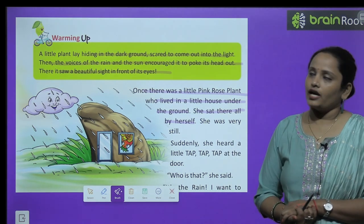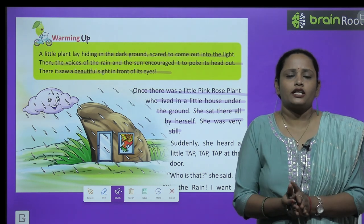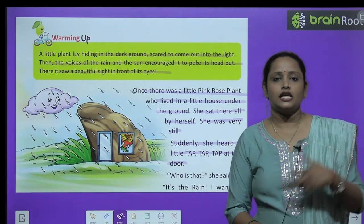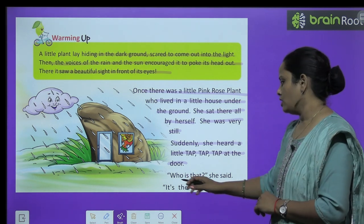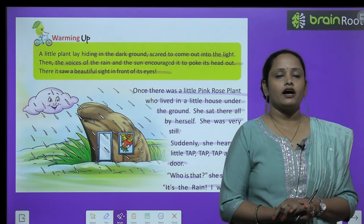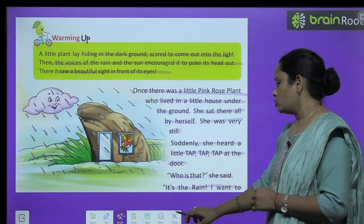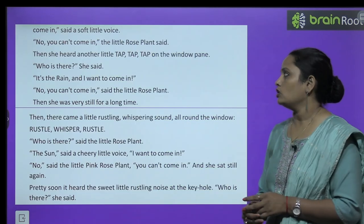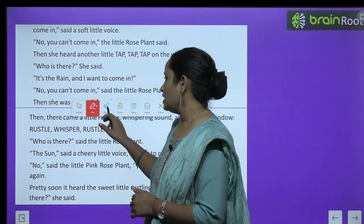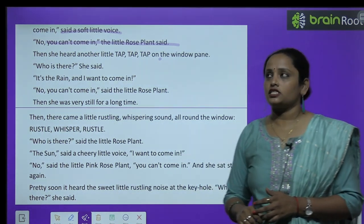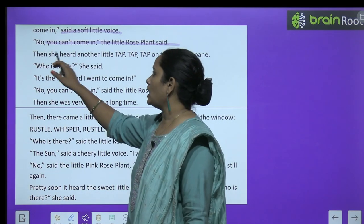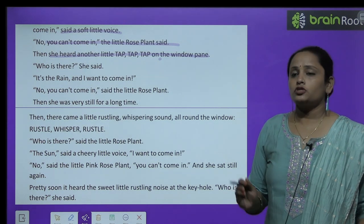She was very still. 'Who is that?' she said. 'That is the rain — I want to come in,' said the soft little voice. The rain said: 'मैं rain हूँ, मुझे अंदर आने दो.' But the little rose plant said, 'No, you cannot come in.'